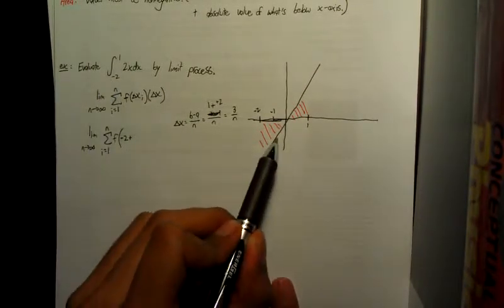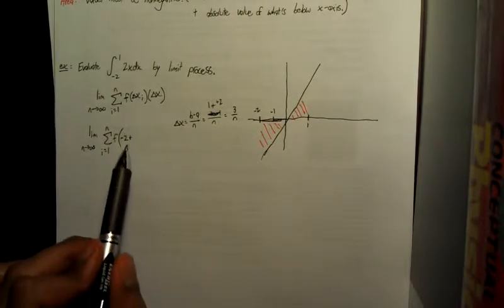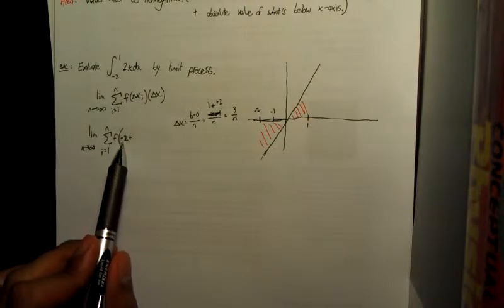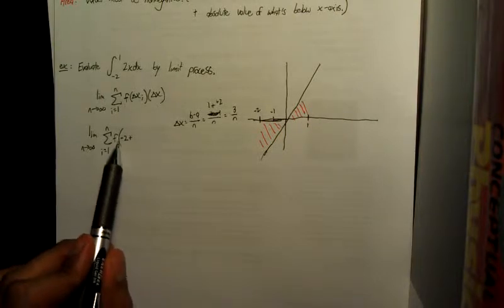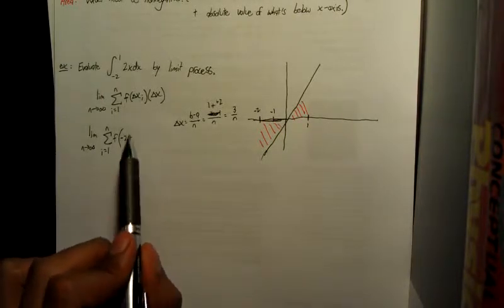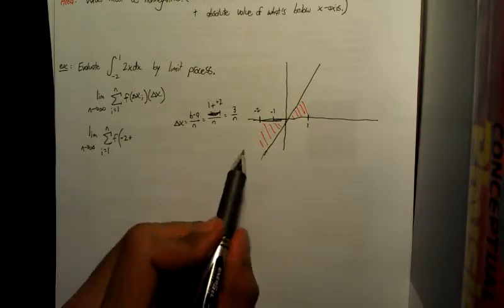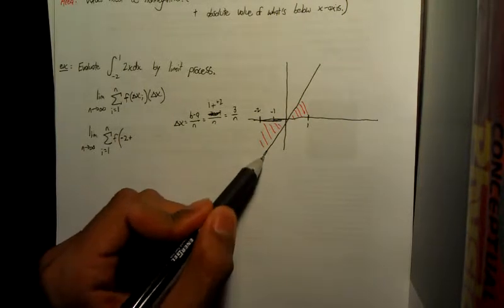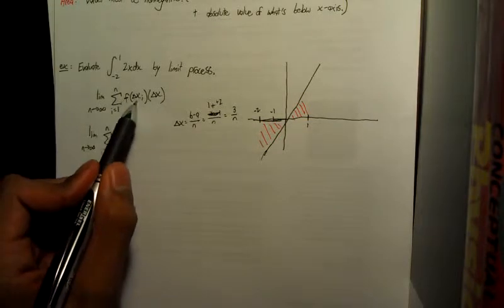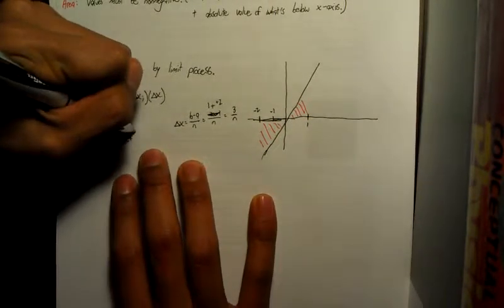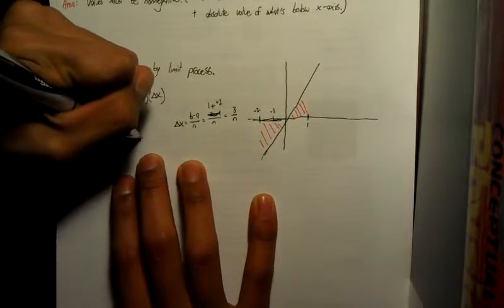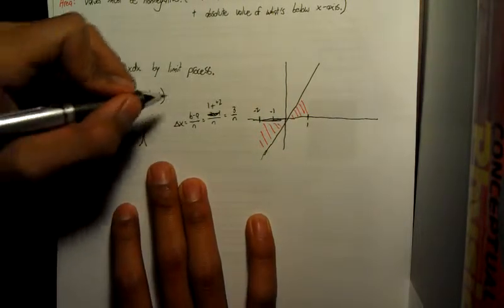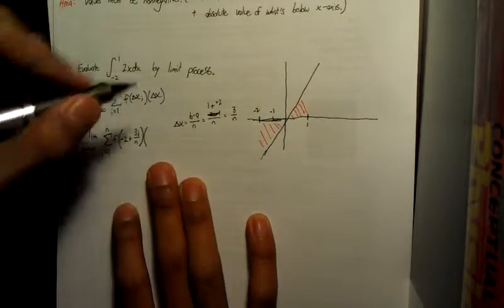Put that into our equation. Now in this case, when we're figuring out what our input value is going to be, because we're starting at negative 2, we're going to have to have a negative 2 right there. Say this would have started at negative 1, we would have had to put a negative 1 right there. Because what you're doing right here is you're getting that first specific input, the first rectangle. The first rectangle is actually going to be at negative 2. So what you're going to be doing is negative 2 plus your change of x times i. So negative 2 plus 3i over n, and then times your change of x, which is still just 3 over n.